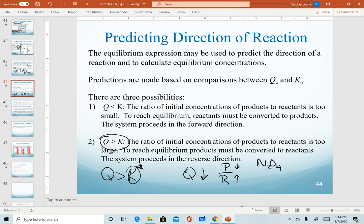And so again, looking at this equilibrium expression or equation, if I need to decrease Q, I need to decrease my products, increase my reactants. And the only way that can happen is if my reaction goes in the reverse direction, or to the left or backwards.